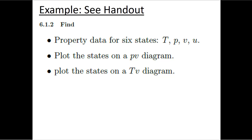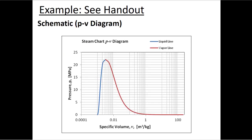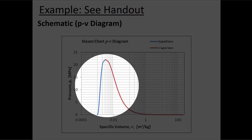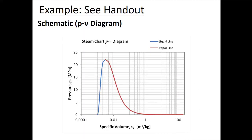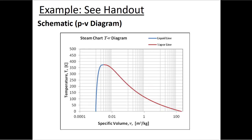As we move through this problem we're going to plot the data from these six states on a PV diagram and on a TV diagram. The PV diagram has a vapor dome — the blue line is the saturated liquid line and the red line is the saturated vapor line — with pressure on the vertical axis and specific volume on the horizontal axis. The TV diagram has temperature on the vertical axis and specific volume on the horizontal axis, and also shows a vapor dome, just with a slightly different shape.